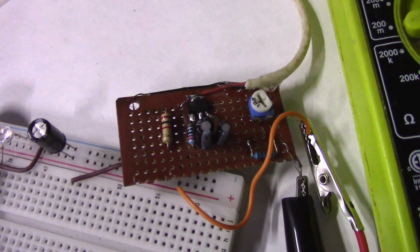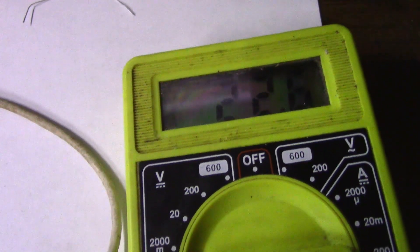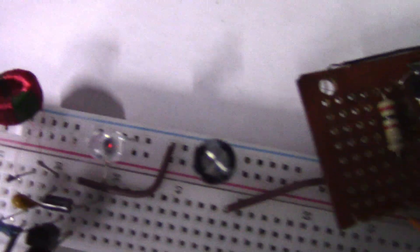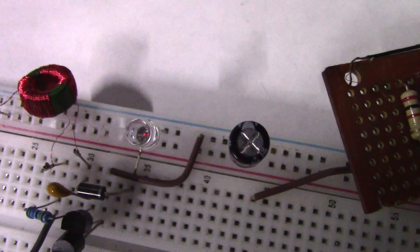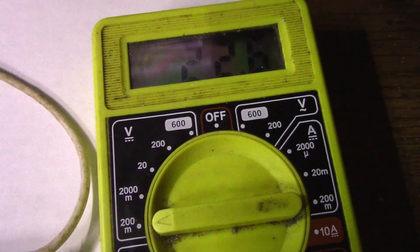So now I've turned that pot, the 1k pot, right the way down. 22.6 millivolts is showing. That is very slightly on. So the new pseudo record is actually 22.6 millivolts. That is absolutely incredible.